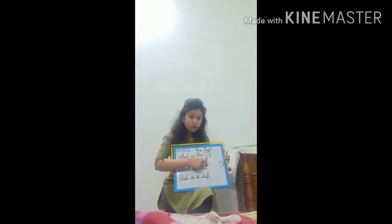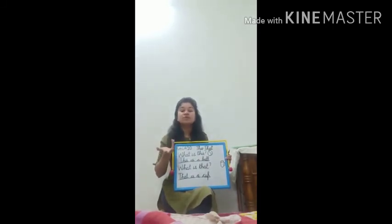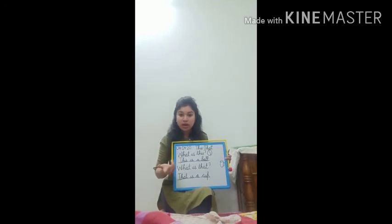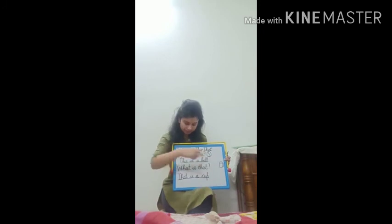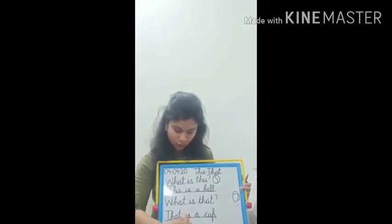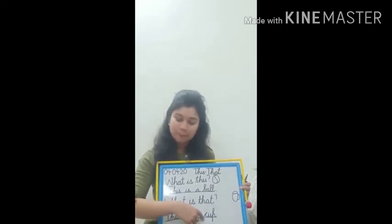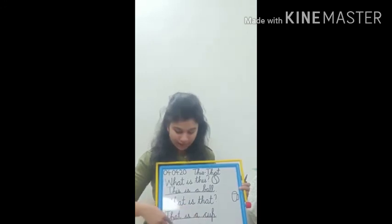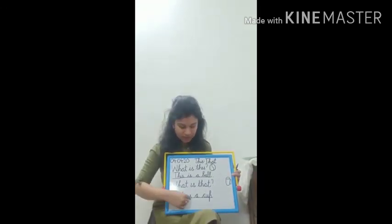Aur ye jo peechhe question kiya hota hai — question mark. Ye kya hota hai? Question mark. Question mark means aapse question put kiya gaya hai — question pucha gaya hai. I have asked you a question and you have to write an answer. Abhi dekho — cup. Cup is far. Cup door hai na? Ball toh paas thi, toh isliye maine 'this' use kiya. Cup door hai, toh T-H-A-T: 'That'. One finger gap, and then: 'is a cup'. That is a cup. First letter capital tha, uske baad sab small.